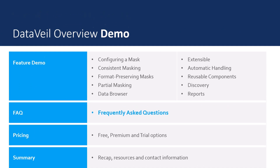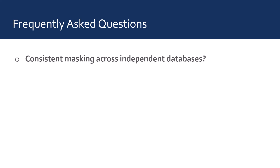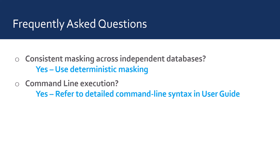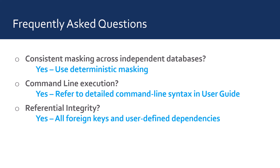Here are some of the most common questions we get asked. Can DataVal mask consistently across independent databases? Yes — use deterministic masking. Provided that the same deterministic settings and same mask configurations are used, then consistent masking is assured, regardless of whether it is multiple occurrences within the same database or in another independent database. It also doesn't matter whether the databases are masked at different times; there is no time limit and there is no mapping data that needs to be saved or shared. Can DataVal be run from the command line? Yes — users typically want this to support masking automation. Please refer to our online user guide for details. Does DataVal support referential integrity? Yes — consistent masking of all columns in foreign key relationships is automatically performed.